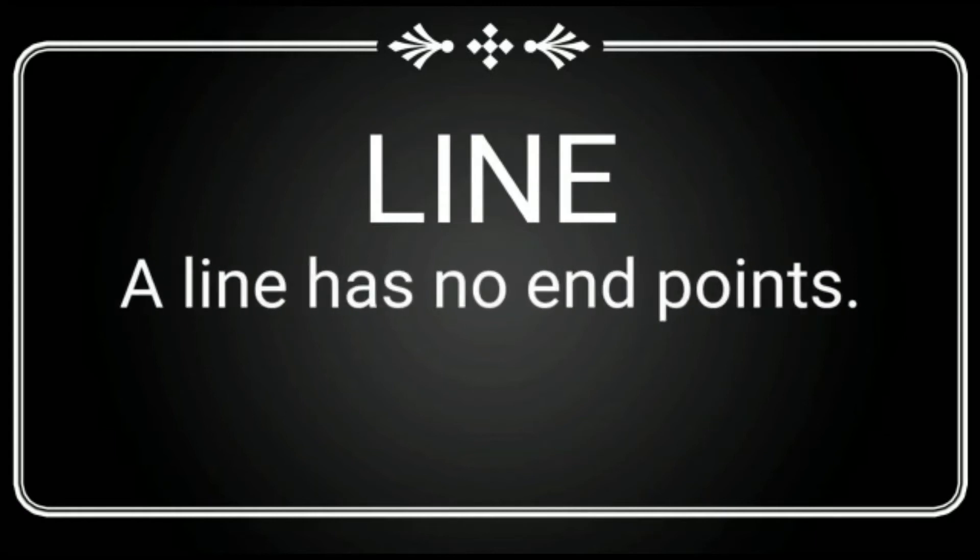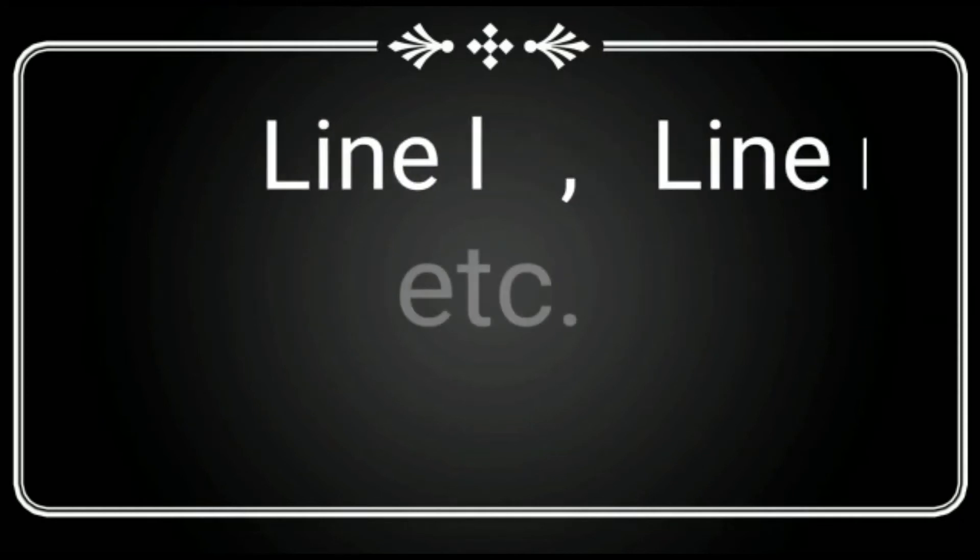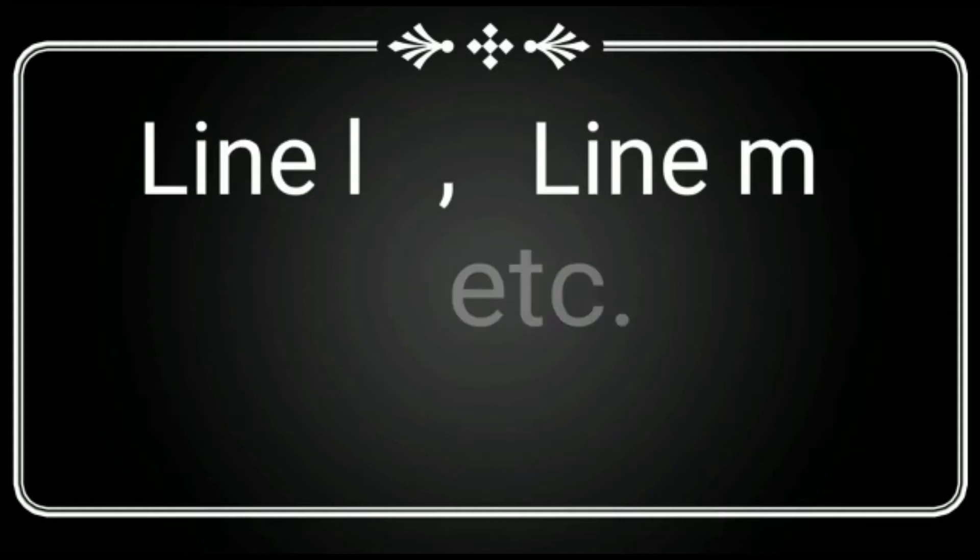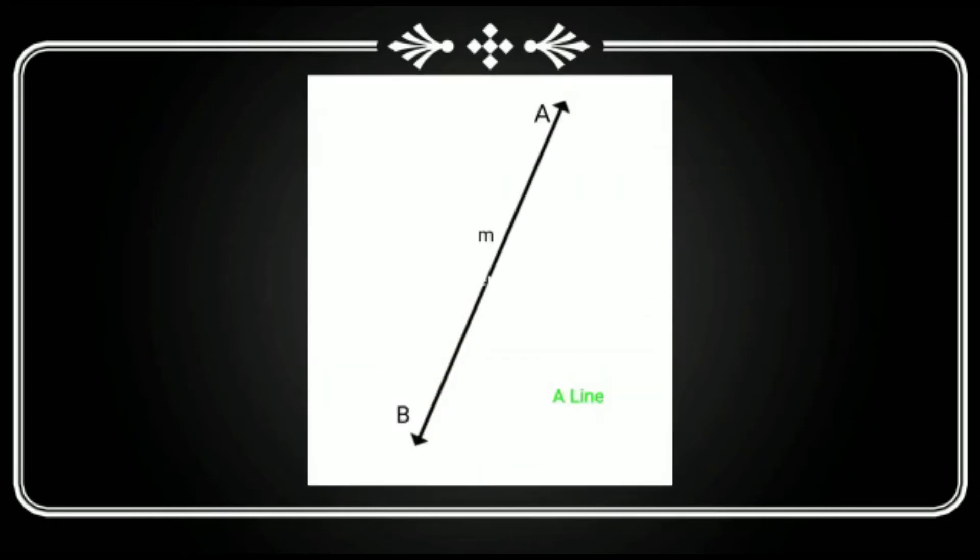A line has no end points. It is denoted by small English letters like line L, line M, etc. The symbol of line is AB capital with arrow at its top.